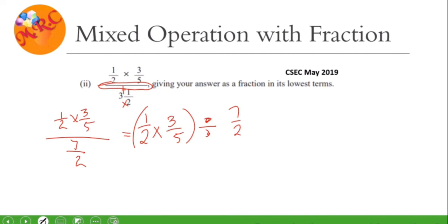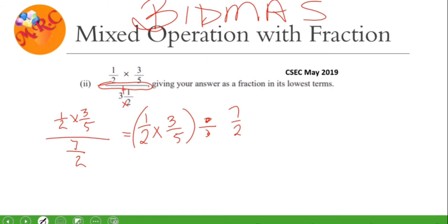Now we're going to apply the principle of BODMAS — or PEMDAS, whichever one you use. It says we're going to do the brackets first. Looking at the bracket, we see one-half times three-fifths. Is there anything that can cancel diagonally? No. Top and bottom? No. So let's go ahead and multiply across: one times three is three, and two times five is ten.